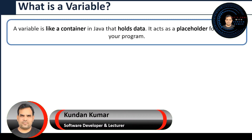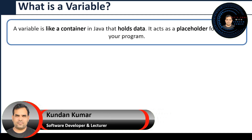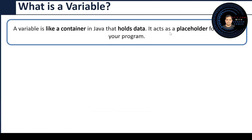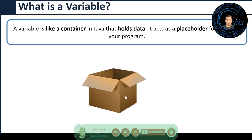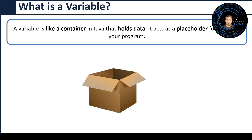What is a variable? We can say a variable is like a container in Java that holds data — it acts as a placeholder for values in your program. As I told you, a variable is like a container with a label. This box can have any name, and it must have some value — we are going to put some data inside the box, and this value is of some type.